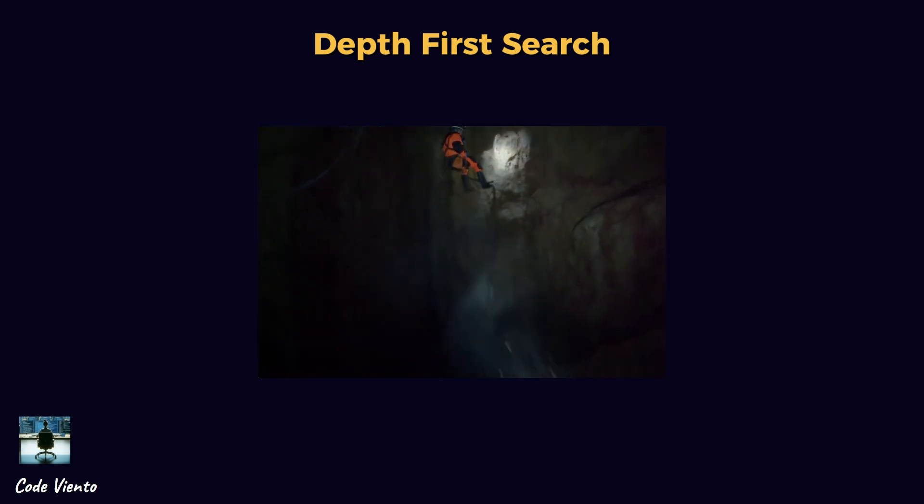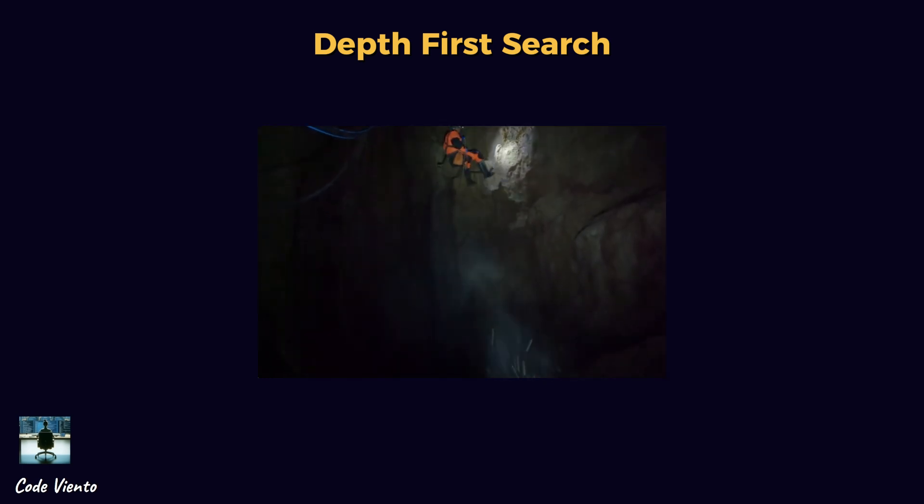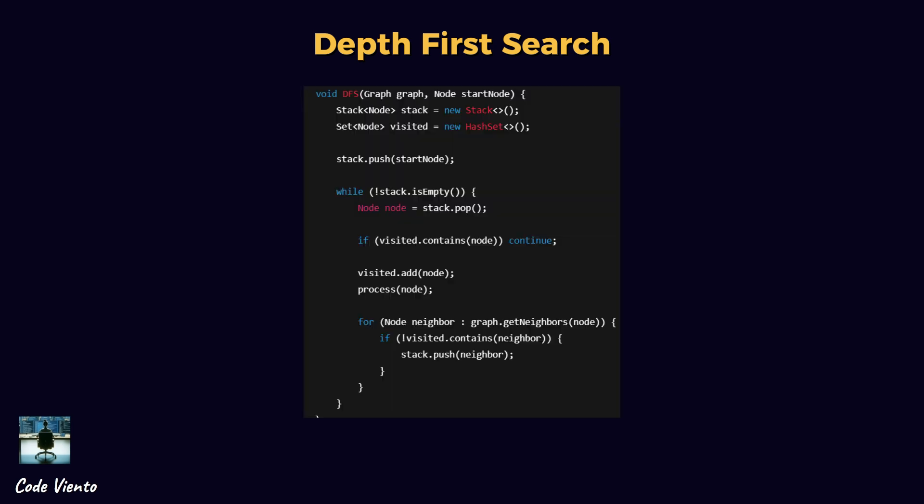Imagine exploring a deep cave. Instead of checking all nearby paths first, you pick one tunnel and go as deep as possible. If you hit a dead end, you backtrack and try another route. This is exactly how depth-first search works. Start at a node like the root of a tree or any point in a graph. Go as deep as possible before backtracking. Use a stack (last-in first-out structure) or recursion to keep track of visited nodes. Repeat until all nodes are explored.